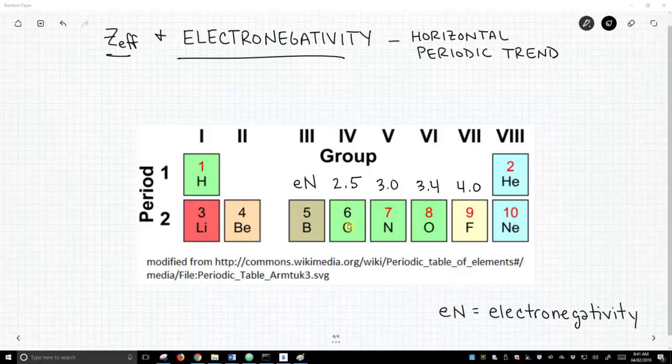And so the electronegativity of carbon is 2.5, nitrogen is 3.0, oxygen is 3.4, and fluorine is 4.0. So why do we see this change in electronegativity as we move horizontally across the periodic table? And we've selected period 2 because these are the elements that we commonly encounter in organic chemistry. But this trend would hold up for period 3, 4, 5, what have you.